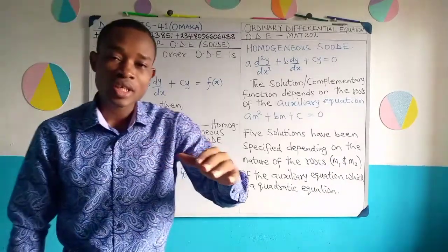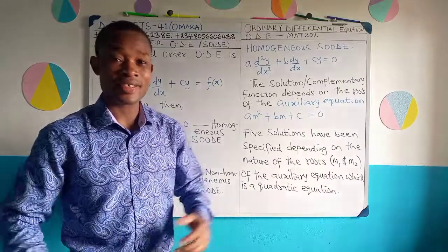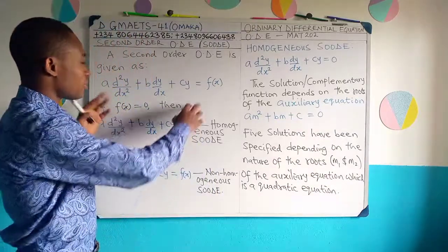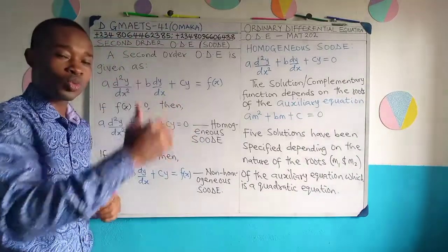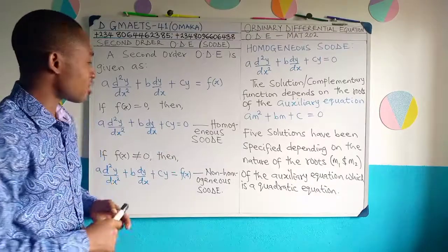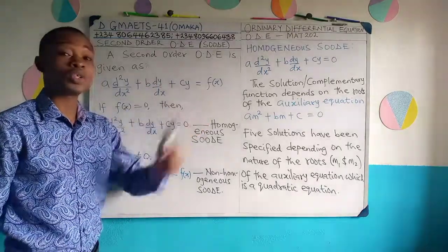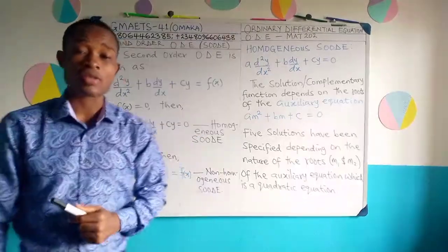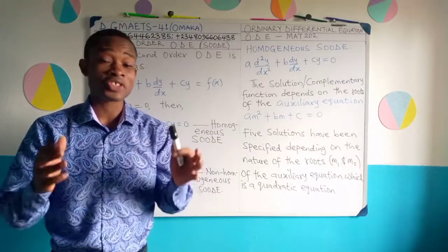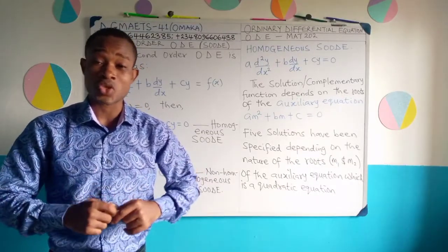Generally, a second-order ordinary differential equation is given by: a(d²y/dx²) + b(dy/dx) + cy = f(x). This is the general representation of a second-order ordinary differential equation, SODE.